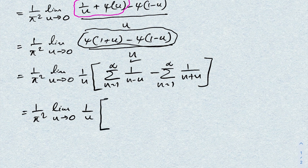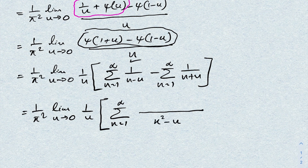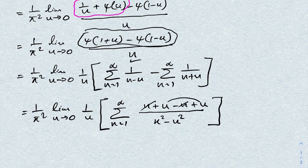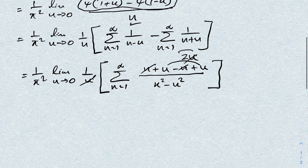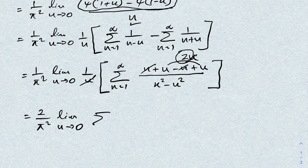So we have (1/π²) times the limit as u→0 of (1/u) times Σ(n=1 to ∞) of (1/(n−u) minus 1/(n+u)). Taking the common denominator gives (n+u − (n−u)) / (n²−u²) = 2u/(n²−u²). The u cancels, leaving (2/π²) times the limit as u→0 of Σ(n=1 to ∞) of 1/(n²−u²).